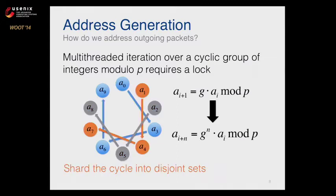Our solution to this was to shard the cycle into disjoint sets, giving independent send threads. We used a simple math trick: replacing our generator with G to the N. Rather than moving forward by one step, we move forward by several steps, offset all of our shards, and each thread gets an independent one. Everything is independent and parallel with no more lock.